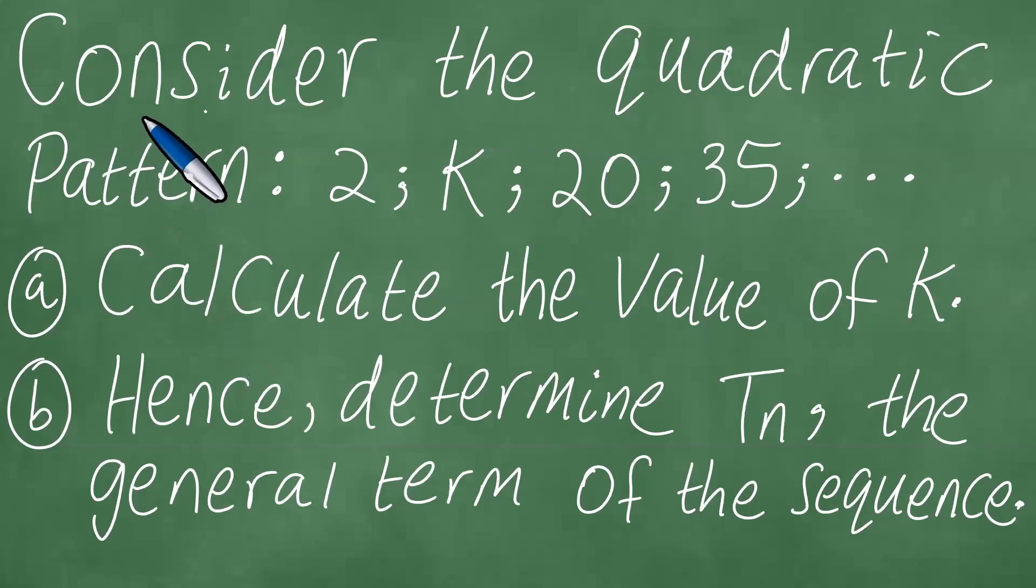We need to consider the quadratic pattern with the terms 2, k, 20, 35, and so on. We shall proceed to calculate the value of k in part a, and hence determine Tn, the general term of the sequence. We proceed to solve this problem in a step-by-step manner, as follows.